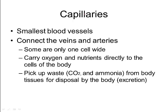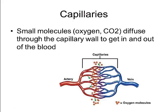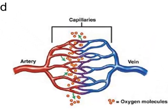Capillaries drop off nutrients and pick up waste like carbon dioxide and ammonia, so those waste products can get to the right parts of the body to be excreted. Capillaries work by diffusion — small molecules with no charge can diffuse through the capillary wall to get in and out of the blood. So there are two main jobs: getting nutrients and waste to and from the cells, and connecting the arteries and veins.